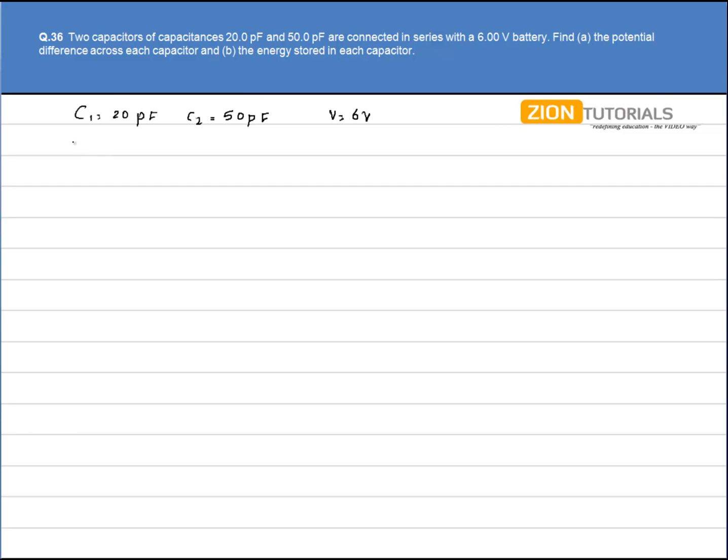First, let's calculate the equivalent capacitance of the circuit. Since these two capacitors are in series, 1 by C equivalent equals 1 by C1 plus 1 by C2, which gives 1 by 20 plus 1 by 50. So C equivalent comes out to be 20 into 50 divided by 20 plus 50.